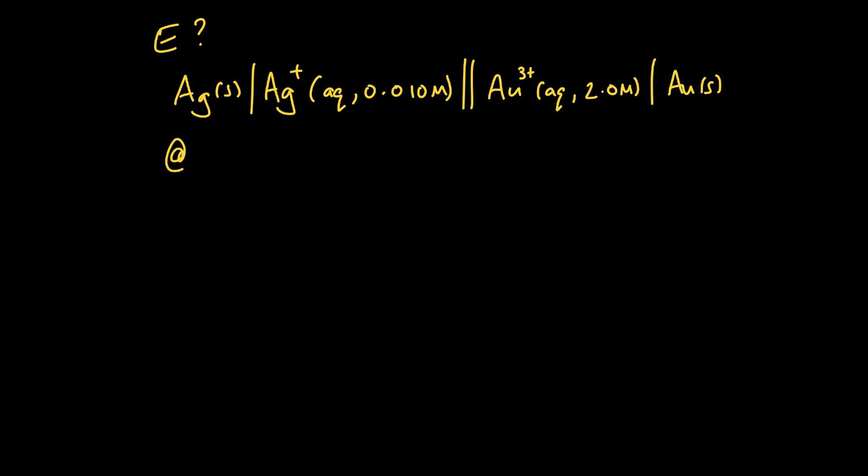And we're going to do this at 25 degrees C. And we calculated earlier that the standard cell voltage for this one is positive 0.7 volts. So if you look up the electrode potential for gold and for silver and you subtract one from the other, you get positive 0.7. So how would we do that?